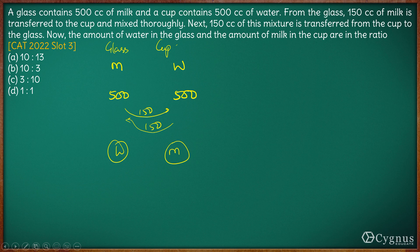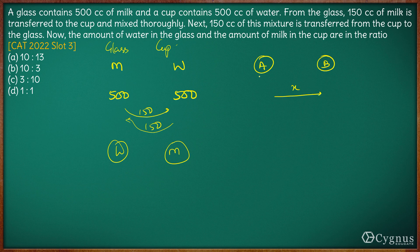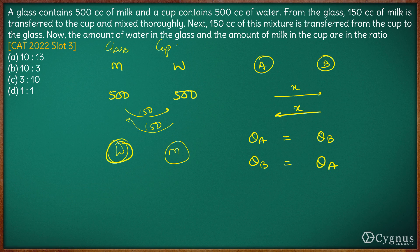We have done this in class as well — there is an exactly same question with different values. Once you have equal quantities of pure A and pure B in two different containers, and you pour x ml from A to B and then x ml from B back to A, the quantity of A in B will equal the quantity of B in A. Hence, the quantity of water in the glass and the quantity of milk in the cup will be equal, so the ratio should be option D: 1 is to 1.